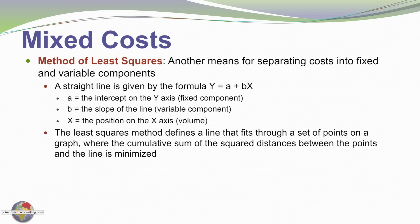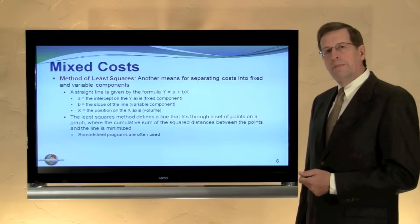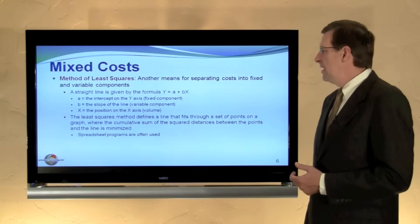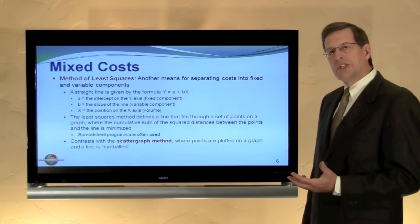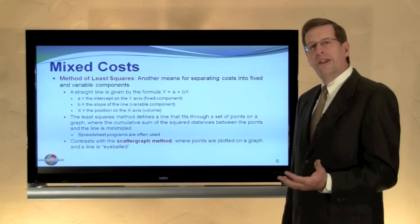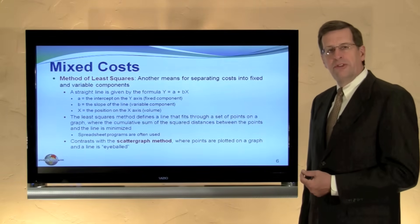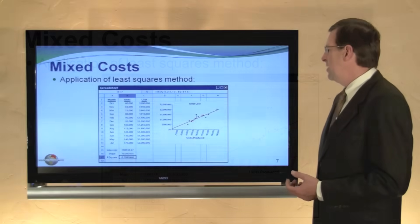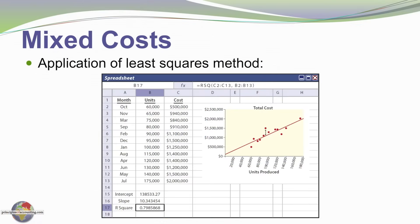So the least squares method then defines a line that fits through a set of points on a graph where the cumulative sum of the squared distances between the points and the line is minimized. Spreadsheet programs can be used for this analysis. This contrasts with a scatter graph method, an alternative method, where points are simply plotted on a graph and a line is drawn through the graph to approximate these values.